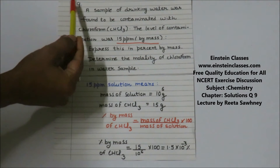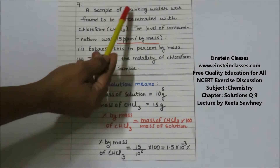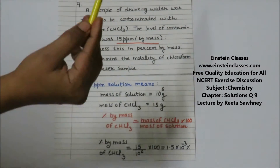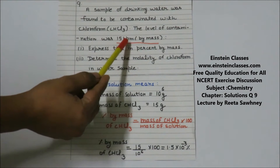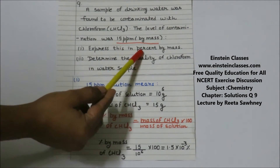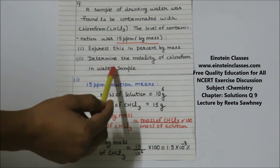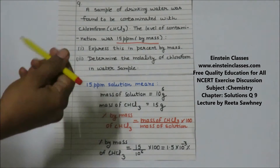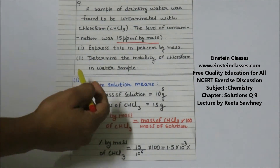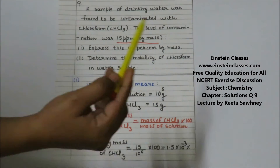We are discussing the NCRT back exercise problem number 9. In this problem, a sample of drinking water was found to be contaminated with chloroform. The level of contamination was 15 ppm by mass. We need to find the percentage by mass of chloroform and the molality of chloroform in the water sample. Chloroform is CHCl3, and 15 ppm means the mass of solution is 10^6 grams and the mass of chloroform is 15 grams.